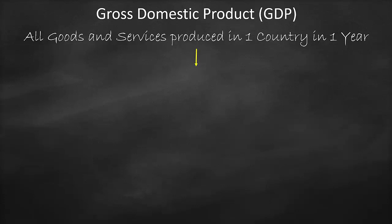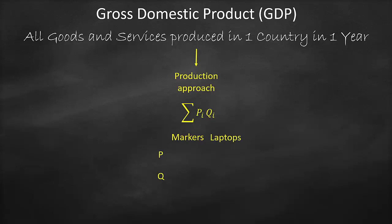How many approaches do we have to measure GDP? We have three approaches. The first approach is based on the definition, which is why we call it the production approach. The production approach formula is the summation of price times quantity for all goods and services produced within the country. For simplicity, let's hypothetically assume we have only two goods: markers and laptops.